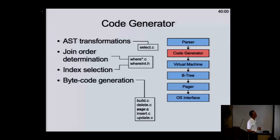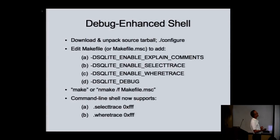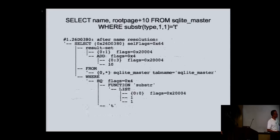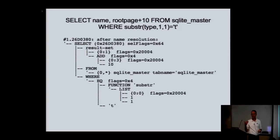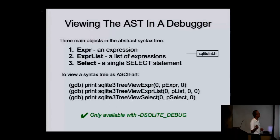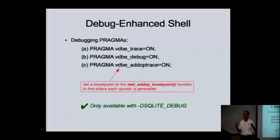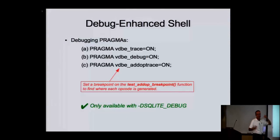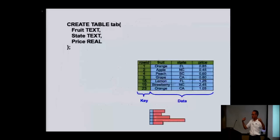For the code generator, to work with it I suggest enhancing your shell by downloading the tarball, doing configure, adding extra preprocessor defines to the makefile, and then building. This gives you extra command line tools that allow you to print out a parse tree in ASCII art. There are also extra pragmas that allow you to trace — it prints out each virtual machine opcode as it runs.